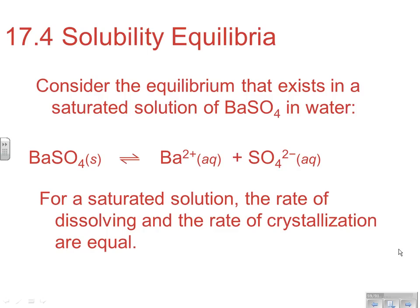Consider the equilibrium that exists in a saturated solution of barium sulfate in water. If you dump it in water, the barium and the sulfate will dissolve, and eventually the solution reaches saturation. At that point, the rate of dissolving equals the rate of recrystallization, and you have an equilibrium system. Any ionic substance in water at high enough concentration to reach saturation gives you an equilibrium reaction, where the rate of dissolving and the rate of crystallization are equal.